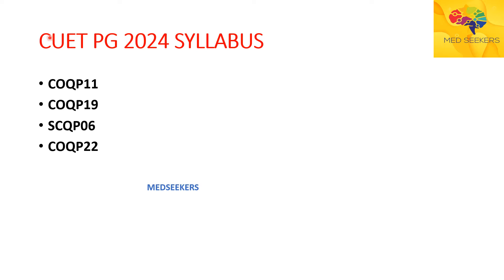There are different codes for public health, and different codes have different syllabi. So make sure you check the appropriate code and download the syllabus according to the code which you have selected in the application form. In this video I will be talking in detail about the COQP19 syllabus. In my upcoming videos I will cover other codes.